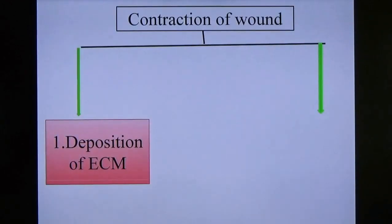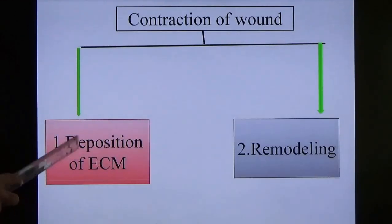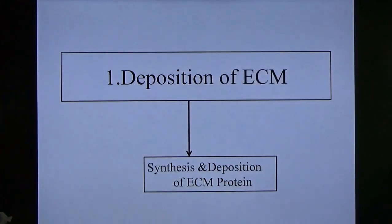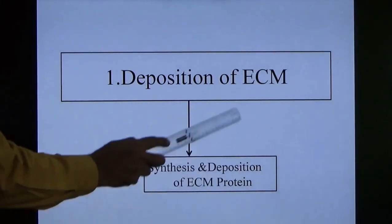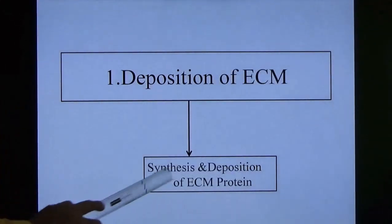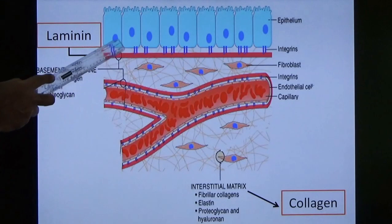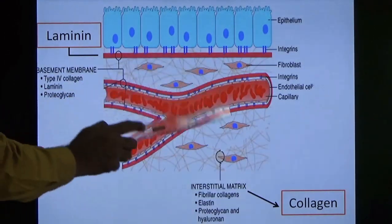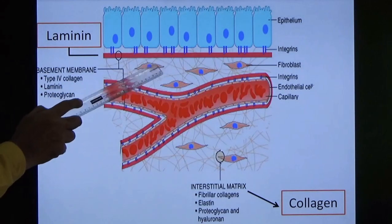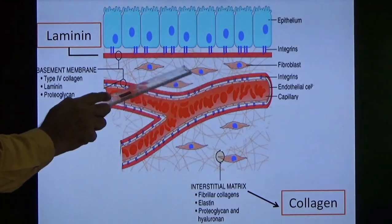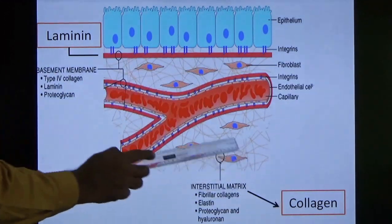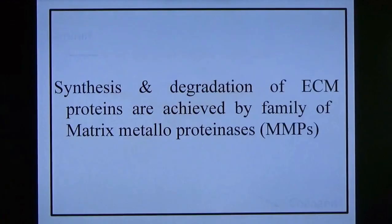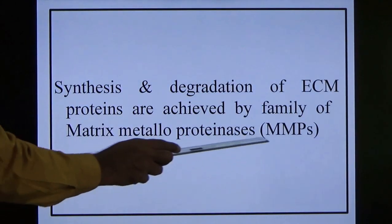Contraction of the wound involves two processes: deposition of ECM and remodeling. ECM means extracellular matrix. Extracellular matrix synthesis occurs — presence of so many proteins. The epithelium, basement membrane, and interstitial matrix all form during this phase after angiogenesis. Fibroblasts secrete collagen fibers, laminin, and many other things. They secrete these via the family of matrix metalloproteinases (MMPs). Please remember this — MMPs are very important.